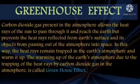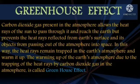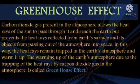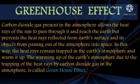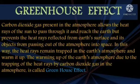The greenhouse effect occurs because carbon dioxide gas in the atmosphere allows the heat rays of the sun to pass through and reach the earth, but prevents the heat rays reflected from the earth's surface from passing out into space. In this way, heat rays remain trapped in the earth's atmosphere and warm it up. The warming of the earth's atmosphere due to the trapping of heat rays by carbon dioxide is called the greenhouse effect.